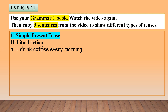I'll give you one example. You have a sentence that says: 'I drink coffee every morning.' So this sentence is a habitual action sentence. So what you need to do is you copy this sentence below habitual action and you write A.